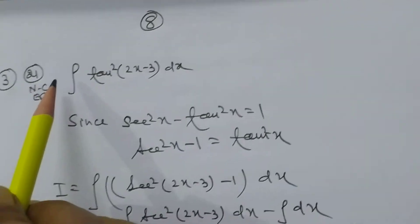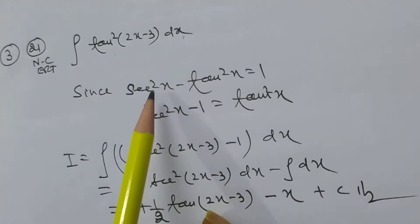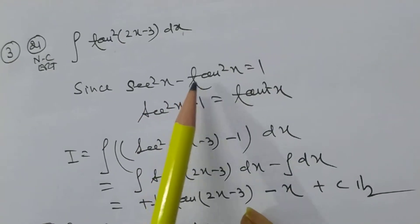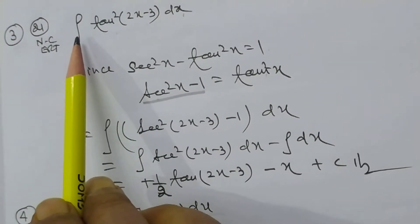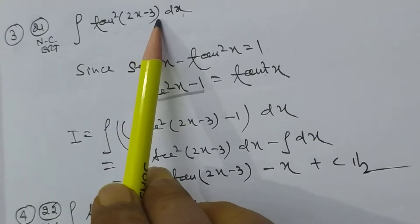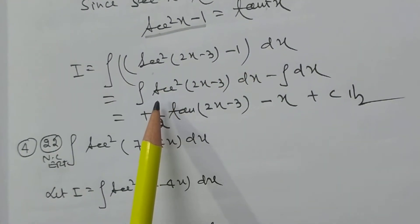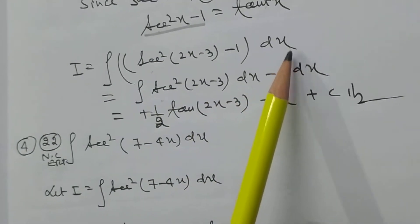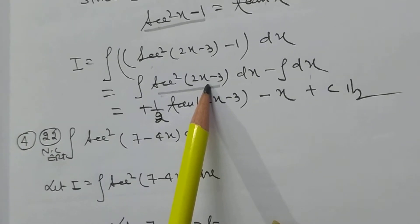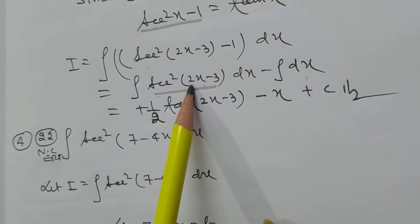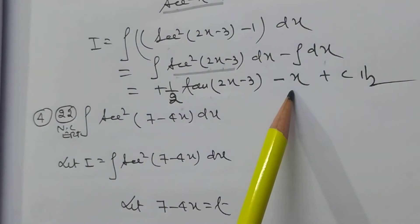Now problem: integration of tan²(2x − 3) dx. Using the identity sec²x − tan²x = 1, so tan²x = sec²x − 1. We write the integral as integral of [sec²(2x−3) − 1] dx. Integration of sec²(2x−3) dx — since the angle is a multiple, we divide by the coefficient 2 — giving (1/2)tan(2x−3) minus x plus c.